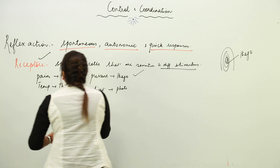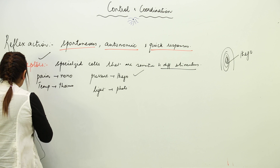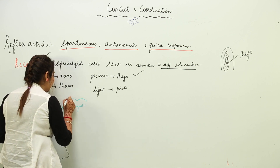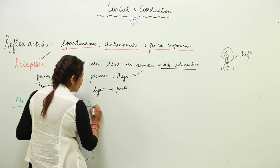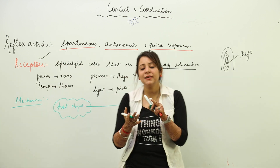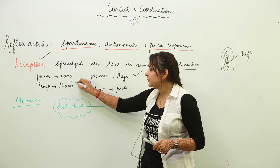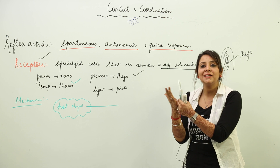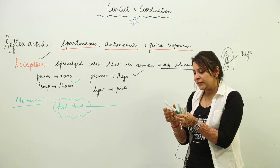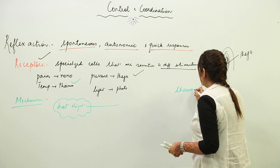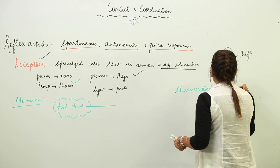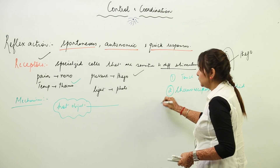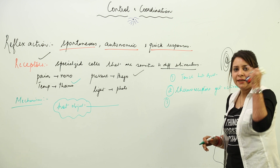Now let's look at the mechanism of reflex action. Suppose you touch a hot iron with your hand. The receptors sensitive to heat — the thermoreceptors — get activated. Once the thermoreceptors get activated, they generate an impulse and send a message to the CNS, which is the brain and spinal cord.